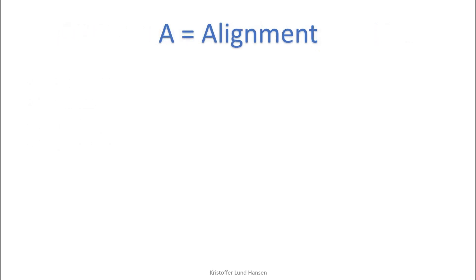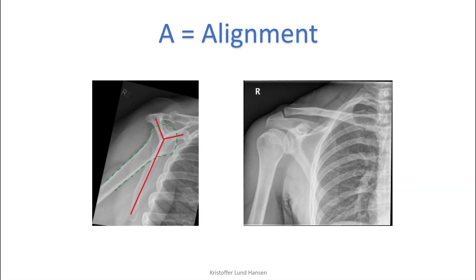A for alignment. In this step we look at how the bones are situated compared to each other. Both the Y view and the anterior-posterior view are good to look at — basically what we look at is if anything is out of place. The more x-rays you see the easier it will be to recognize. The great thing about the Y view is to see whether the head of the humerus lies in the bifurcation. For the AP view we look mainly at the acromioclavicular joint and at the glenohumeral joint. Remember that in the routine AP view the glenohumeral joint is taken at an angle, giving an impression of being wider at the top and closer together at the bottom.